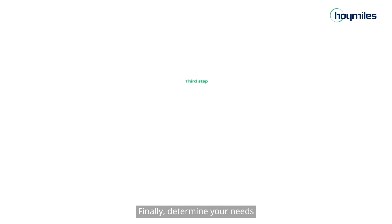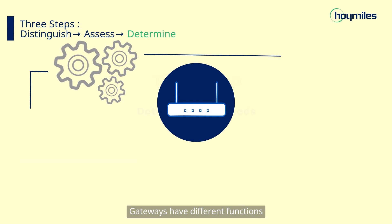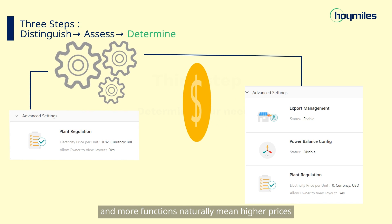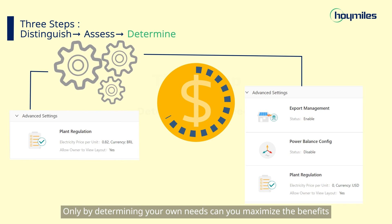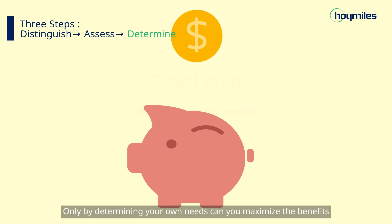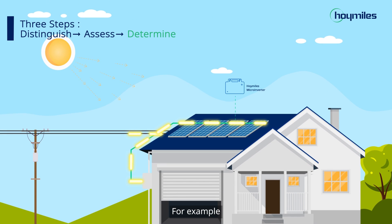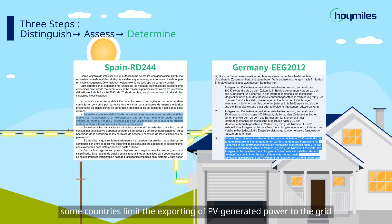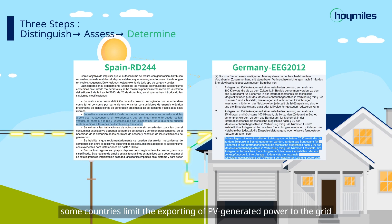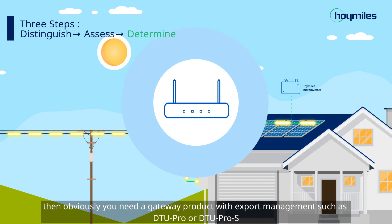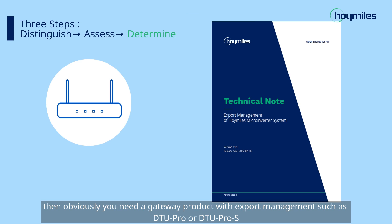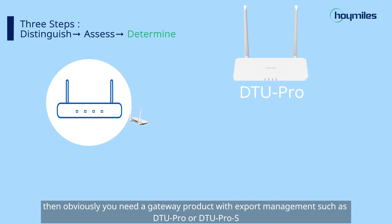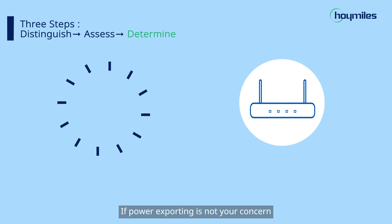Finally, determine your needs. Gateways have different functions, and more functions naturally mean higher prices. Only by determining your own needs can you maximize the benefits. For example, some countries limit the exporting of PV-generated power to the grid — then obviously you need a gateway product with export management, such as DTU-Pro or DTU-Pro S.